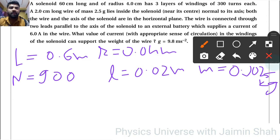The wire is connected through two leads parallel to the axis of the solenoid to an external battery which supplies a current of I equals 6 amperes. What value of current with appropriate sense of circulation in the windings of the solenoid can support the weight of the wire?